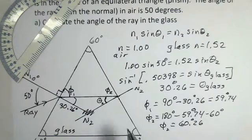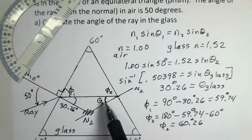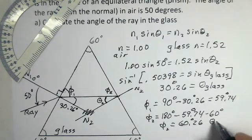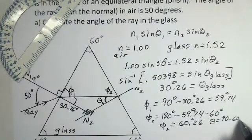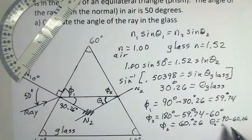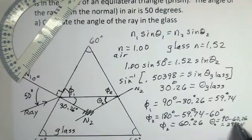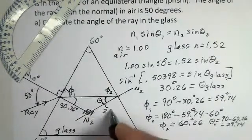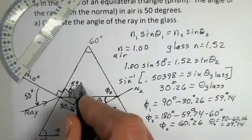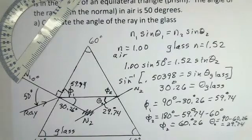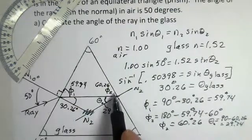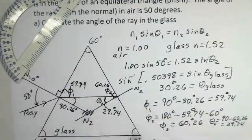Now I can calculate this theta 2 this theta for where we're in the glass on the exit side and that theta would be 90 minus 60.26 degrees and that theta is 29.74 degrees. I'm going to go ahead and label that in here 29.74 degrees. The Phi 1 was 59.74, the Phi 2 was 60.26 and 90 again here between the normal and this side of the glass is 90 degrees.